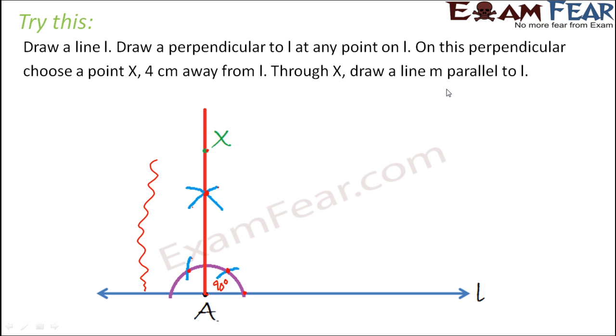Now through X, draw a line M parallel to L. So basically from this X, you need to draw a line that would be parallel to L. So for that, what do you need to do? You need to ensure that the alternate angles are equal. Now let us assume, so let's say this is just a rough assumption. Let's say there is a line running like this and we want this line to be parallel to this line. In that case, the alternate angles must be equal. Which would be the alternate angle? So this angle and this angle, these are alternate angles.